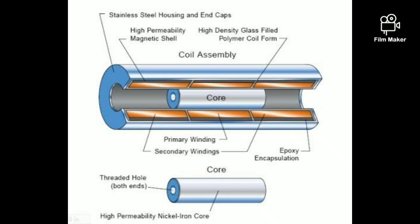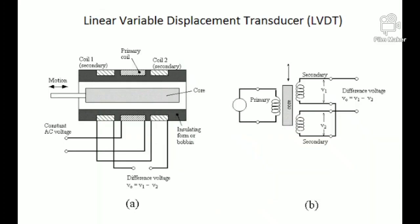When the core is at the center position as shown in the figure, at that time ES1, the voltage output from secondary winding first, is equal to ES2, that is secondary winding two voltage output. So by motion of the core, the displacement can be verified.